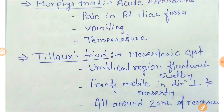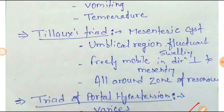Next one is Tillaux's Triad, found in mesenteric cyst. Here there is a soft fluctuant swelling in the umbilical region, freely mobile in the direction perpendicular to the mesentery, and an all-around zone of resonance — meaning when you percuss, there is a resonating sound.